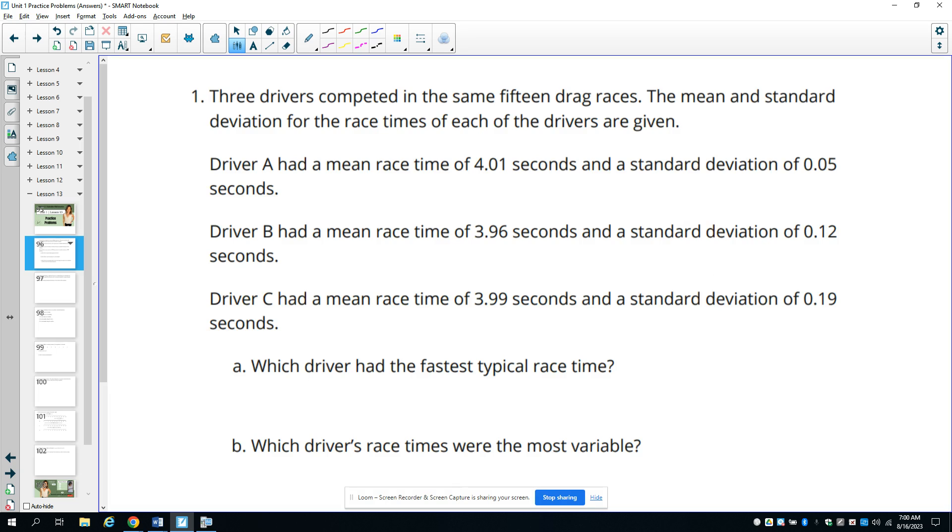Number one tells us that three drivers competed in the same 15 drag races and then were given the mean and standard deviation for their race times. So for driver A, it tells us that their mean race time is 4.01 and their standard deviation is 0.05. Driver B, it's 3.96 for their mean with a standard deviation of 0.12. And then driver C is 3.99 seconds for the mean and then a standard deviation of 0.19.